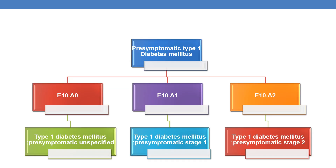Coming to presymptomatic type 1 diabetes mellitus, as discussed, it is given by E10.A. The final code E10.A0 is given for type 1 diabetes mellitus presymptomatic unspecified. E10.A1 is given for type 1 diabetes mellitus presymptomatic stage 1, and E10.A2 is given for type 1 diabetes mellitus presymptomatic stage 2.